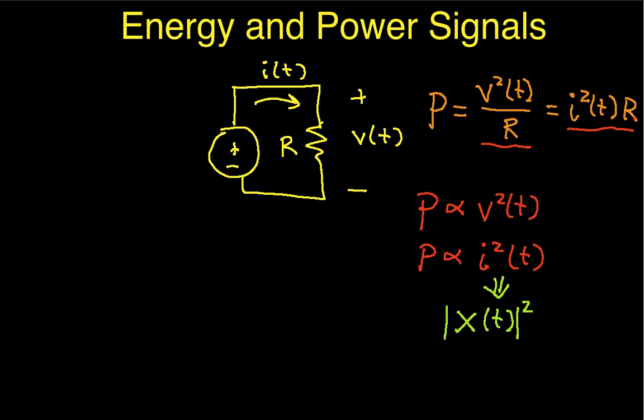Two points: In systems, we typically talk about this quantity being the power of the signal, when in reality signals by themselves don't dissipate power until they're run through a resistive element. But we still talk about the signal as if it had power, which is the magnitude squared. Also, the absolute value signs around X allow us to use the same definition for complex signals, since we often define complex signals mathematically because they're useful.